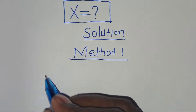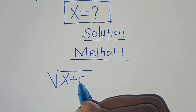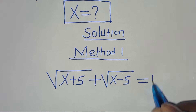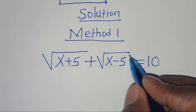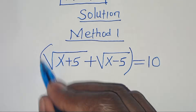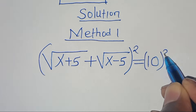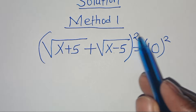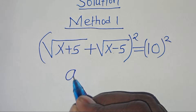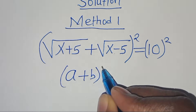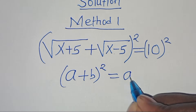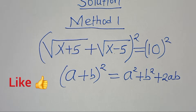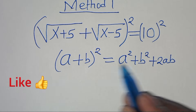We have the square root of x plus 5, plus the square root of x minus 5, equal to 10. The first step is to square both sides. The left side is in the form of (a + b)², which we can express as a² + b² + 2ab. Applying this algebraic identity: